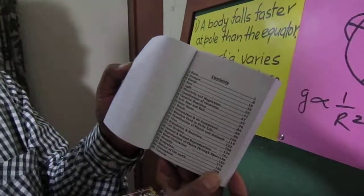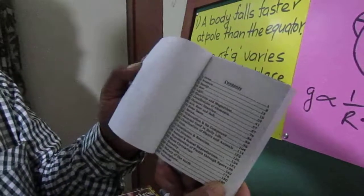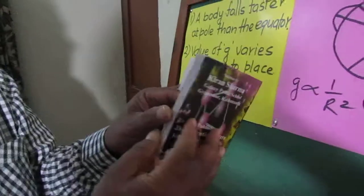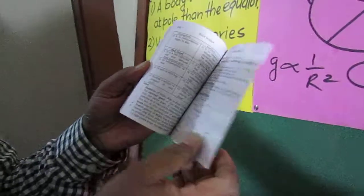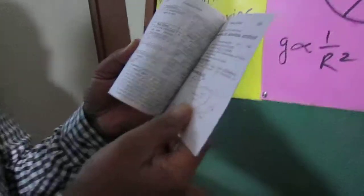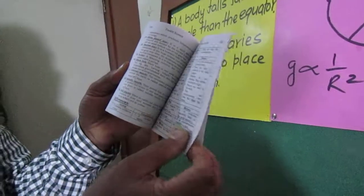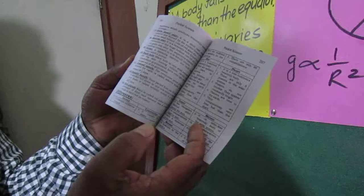There are altogether 25 chapters in class 10 of the Nepali syllabus, and in these 25 chapters there are definitions, rules, laws, characteristics, differences between concepts, and formulas. Everything is given, and actually this is a concentrated form of the class 10 syllabus of science.